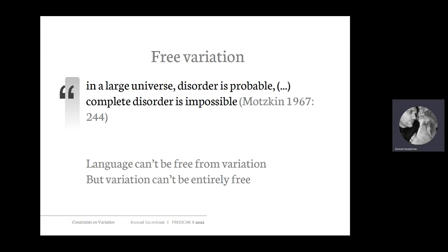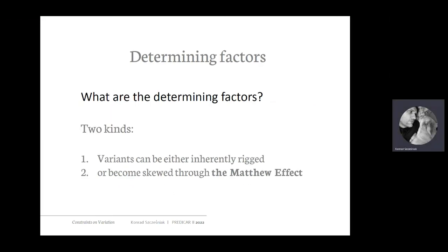To sum up what we've seen so far: language can be free from variation — there is always variation — but the variation we see in language can't be entirely free. Why not? What are the determining factors behind variation? These factors come in two flavors, two kinds.